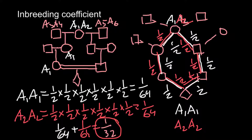If you need the answer in percentage form, you have to divide 1 by 32 and multiply by 100. So I have just shown you the logic of how we calculate the inbreeding coefficient.